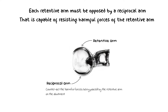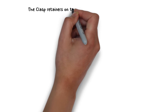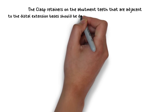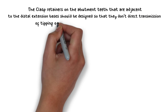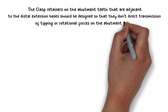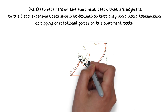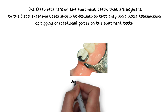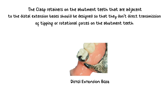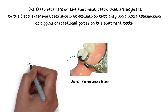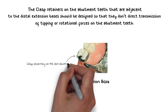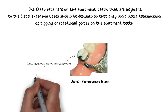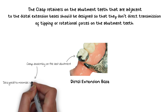Applying the same concept: clasp retainers on abutment teeth adjacent to distal extension bases should be designed so that they do not direct the transmission of tipping or rotational forces onto those abutment teeth. Otherwise, harmful forces will be applied to the abutment and this will lead to eventual failure of the denture. The direct retainer on the last abutment teeth of distal extension bases should be designed so as not to apply any harmful tipping or rotational forces onto those last abutments.